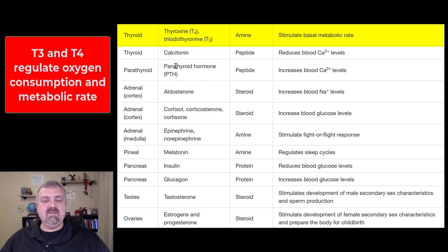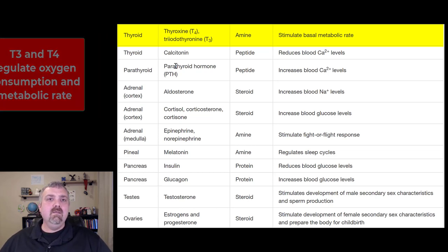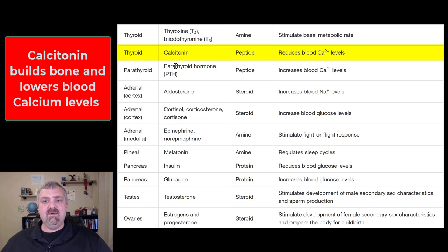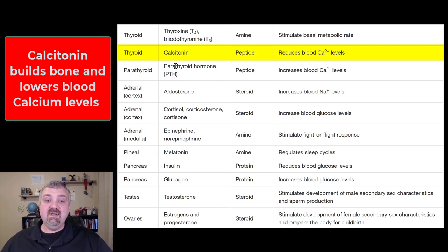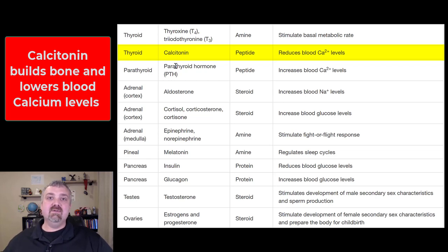Next we have the thyroid gland, which produces thyroid hormones: thyroxine, which is T4, and triiodothyronine, which is T3. The T4 and T3 tell you how many iodines they have. These thyroid hormones stimulate your metabolism. The thyroid gland also produces calcitonin, which brings blood calcium levels down by putting calcium into your bones. Calcitonin is very important when you're younger and building bone, but calcitonin levels aren't as significant in adults — which is why older individuals lose bone rather than build it.